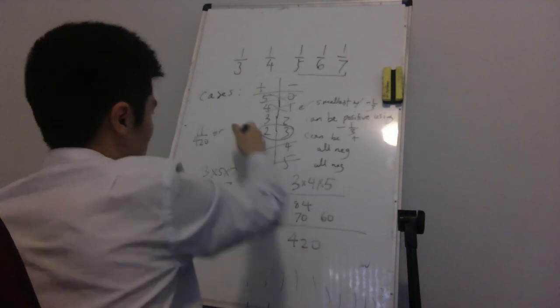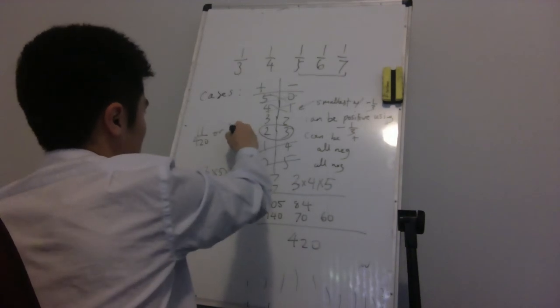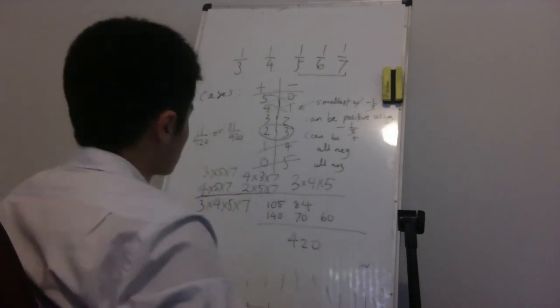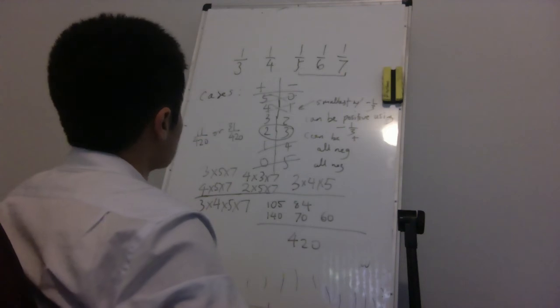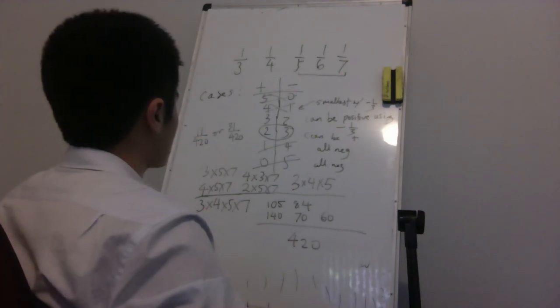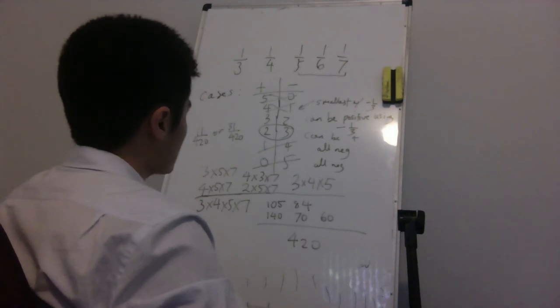So, it's either 11 out of 420 or whatever we had before, like 31 out of 420. So, 11 out of 420 is obviously small. And then it's obviously between 1 over 50 and 1 over 20.